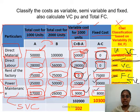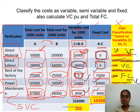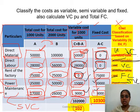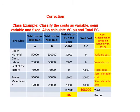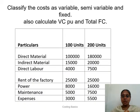The problem also asks for total fixed cost and variable cost per unit. Total all variable cost items and divide by 1,000 units — that gives a variable cost of 102 per unit. The fixed cost column totals give the total fixed cost. When you add variable cost and fixed cost, you get the total cost, which you can recheck. Try the next problem for the next class and doubts will be clarified in a live session next week.